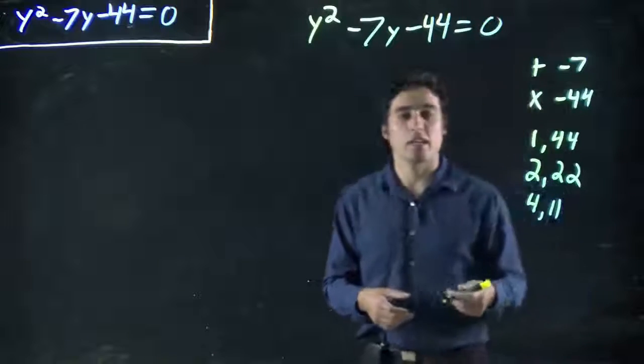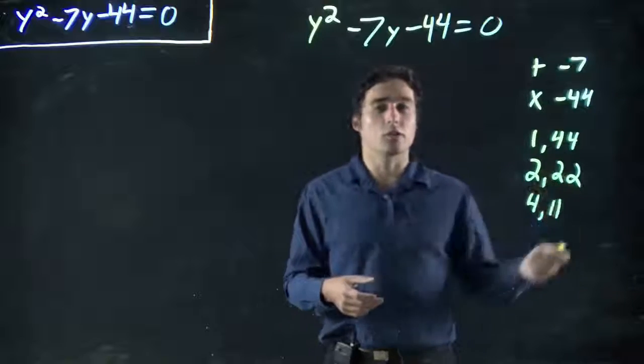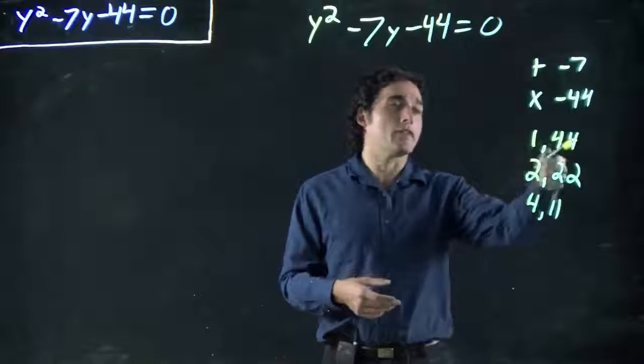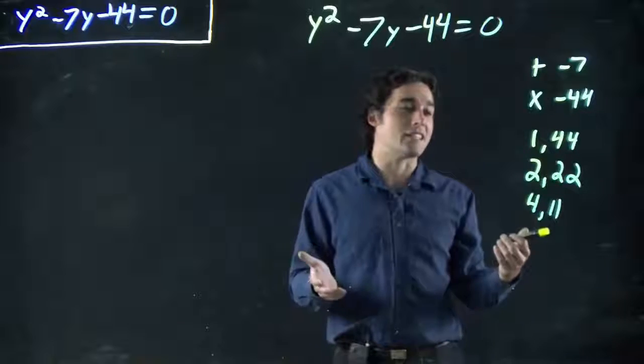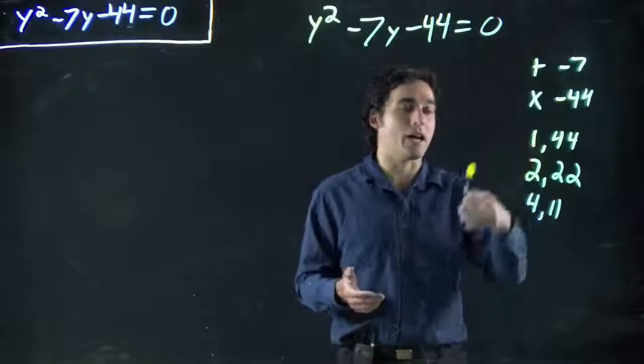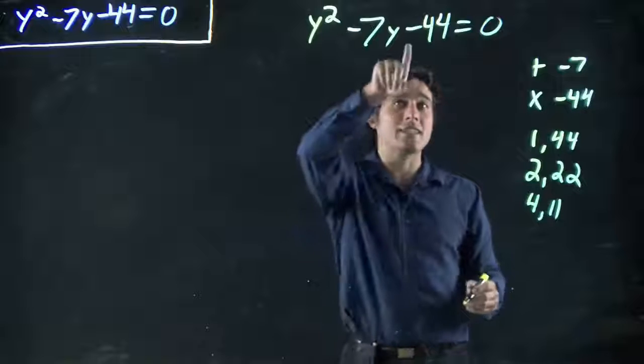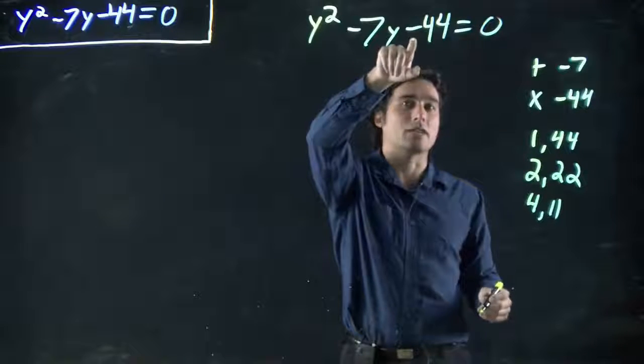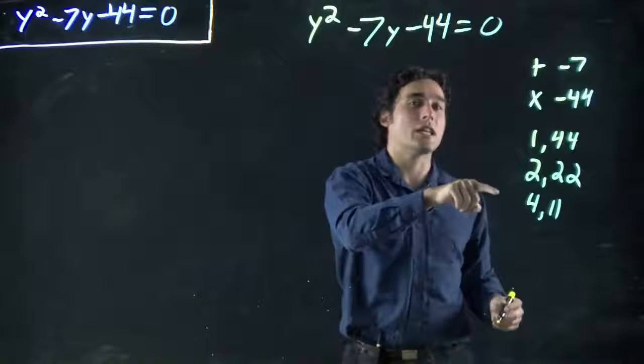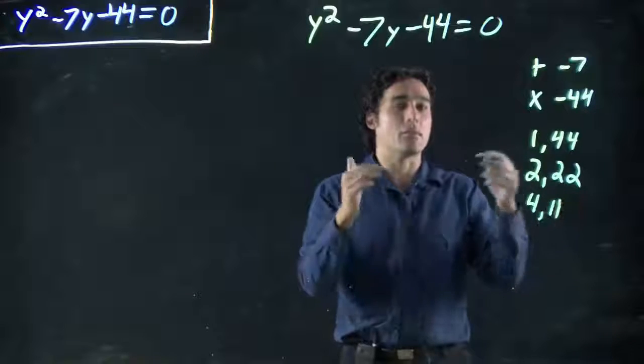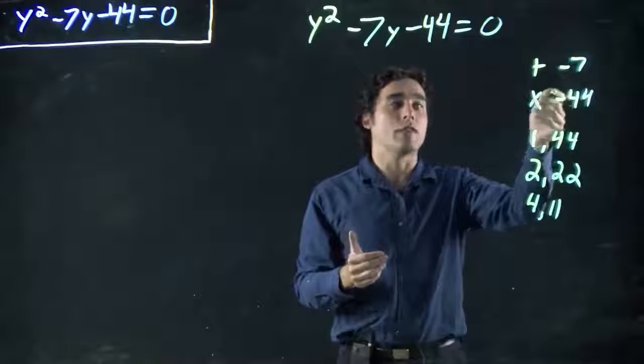So, even if you miss some, it doesn't matter. You can always go back. If these don't work, find others. Well, 1 and 44—no way that's equaling 7, even with pluses or minuses. Remember, when I see a minus on -44, I know one of these numbers has to be negative, one positive, because a negative and positive multiplied together give a negative.